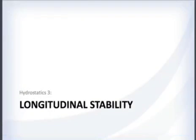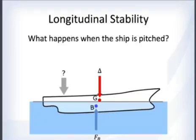That was a quick introduction to transverse stability. Longitudinal stability covers what happens when the ship is pitched — pressing on the bow or stern — and shares many of the same concepts, but in practice there are important differences.